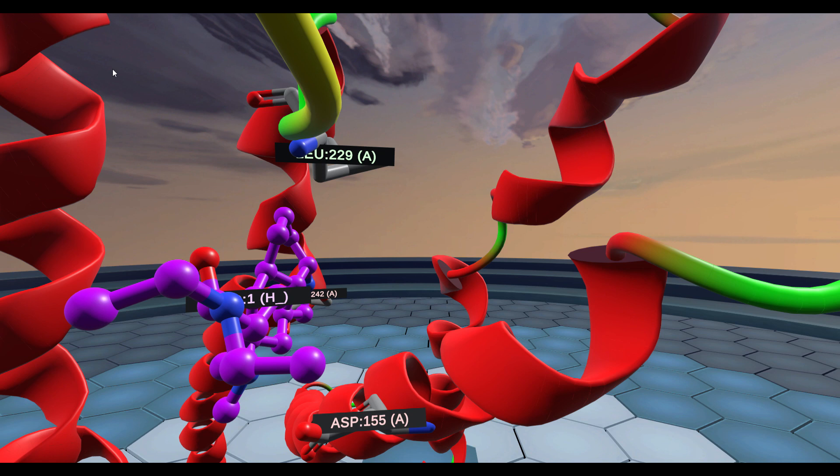It's really a hypothesis that this whole extracellular loop 2 acts like a lid trapping LSD inside of the receptor. And if you change the mechanism of that lid by changing leucine 229 to an alanine, the drug can escape a lot quicker and the lid mechanism doesn't work as well.